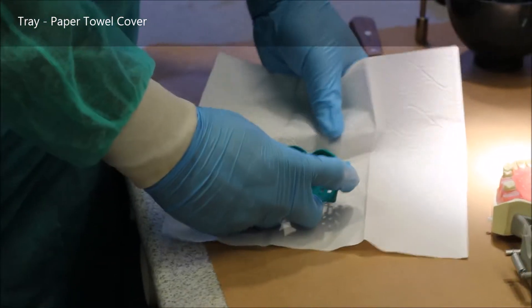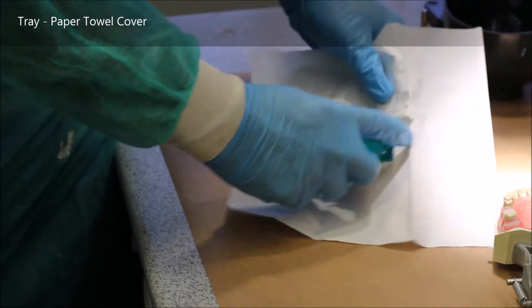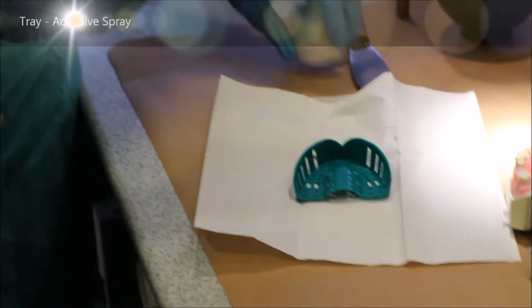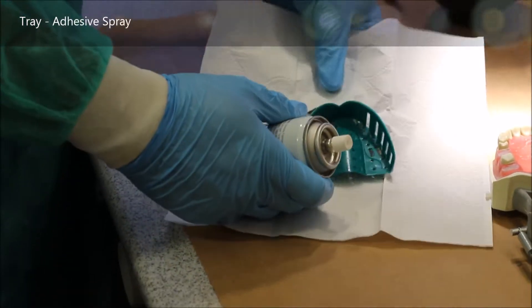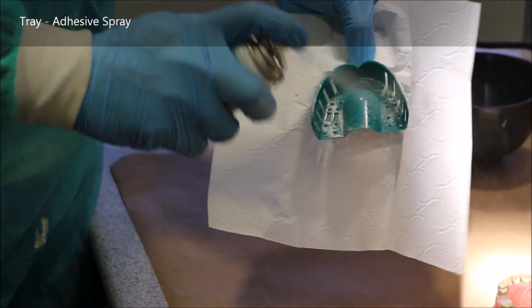You take your tray and poke the handle through the paper towel in order to give yourself an area where you can spray adhesive without ruining your workbench. You spray a light coat of adhesive all over the tray.